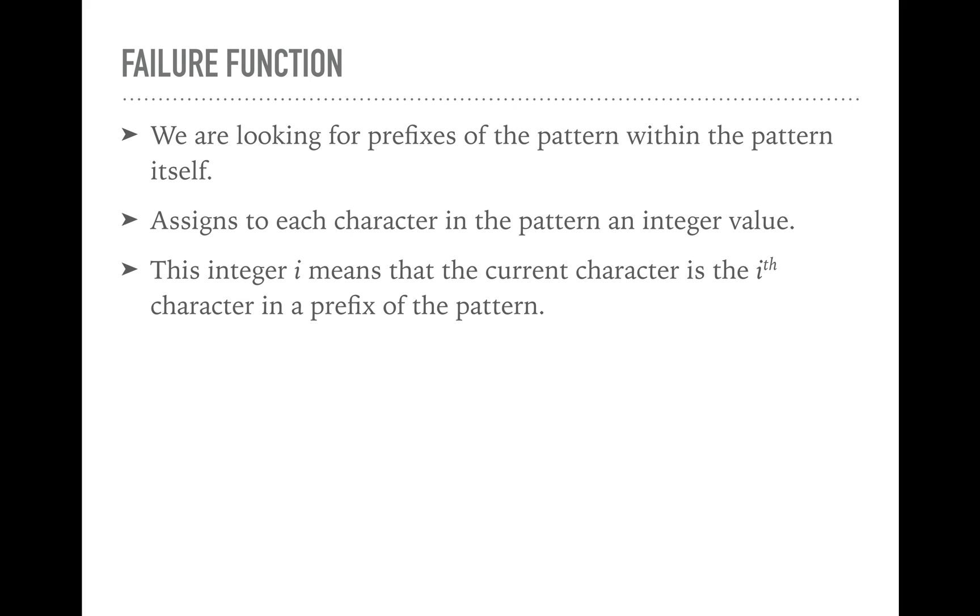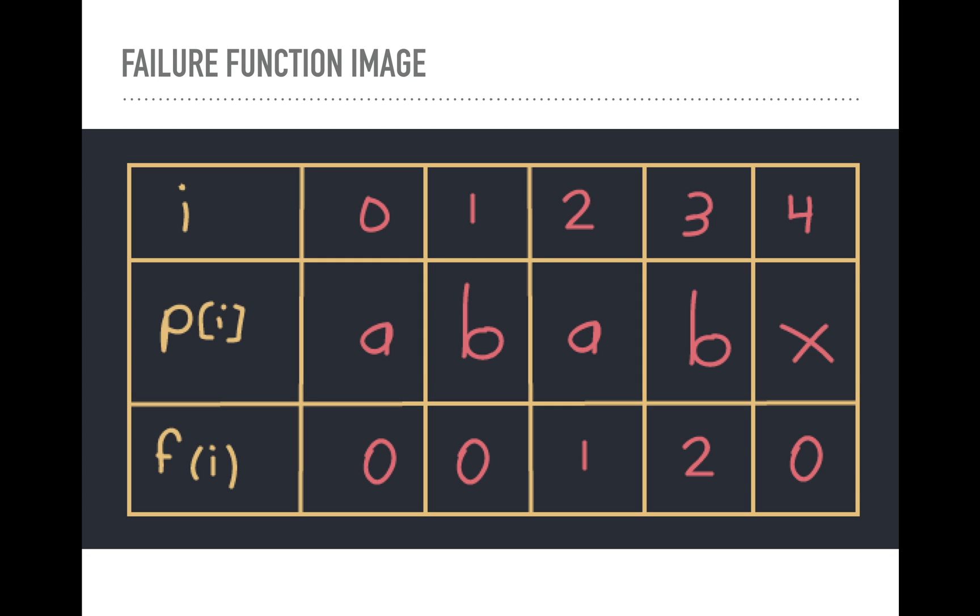So the failure function, we're looking for prefixes of the pattern within the pattern itself. That's what the failure function is looking for. It's going to assign each character in the pattern with an integer value. You're going to have an integer assigned to each character. So this integer i means that the current character is the i-th character in a prefix of the pattern.